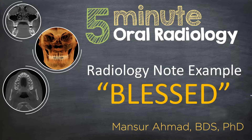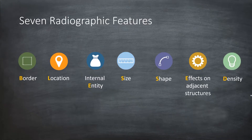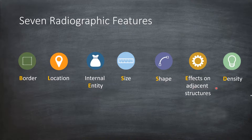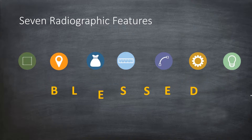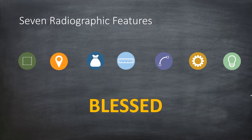In a previous video, we talked about the acronym BLAST. The seven radiographic features of a lesion to describe are: border, location, internal entity or internal content, size, shape, effects on the neighboring structures, and density. Remember the acronym BLAST to recall all seven radiographic features of a lesion.